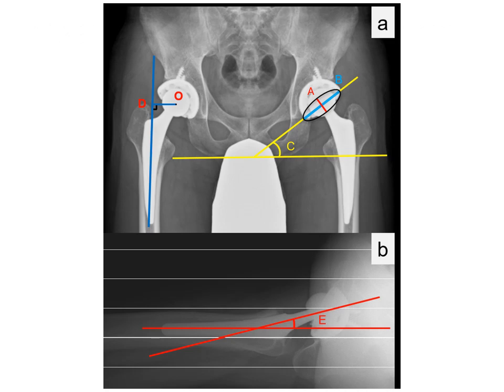Using X-ray, we examined cup anteversion angle, cup inclination angle, femoral offset, and stem anteversion angle for a possible association with posterior dislocation after THA.